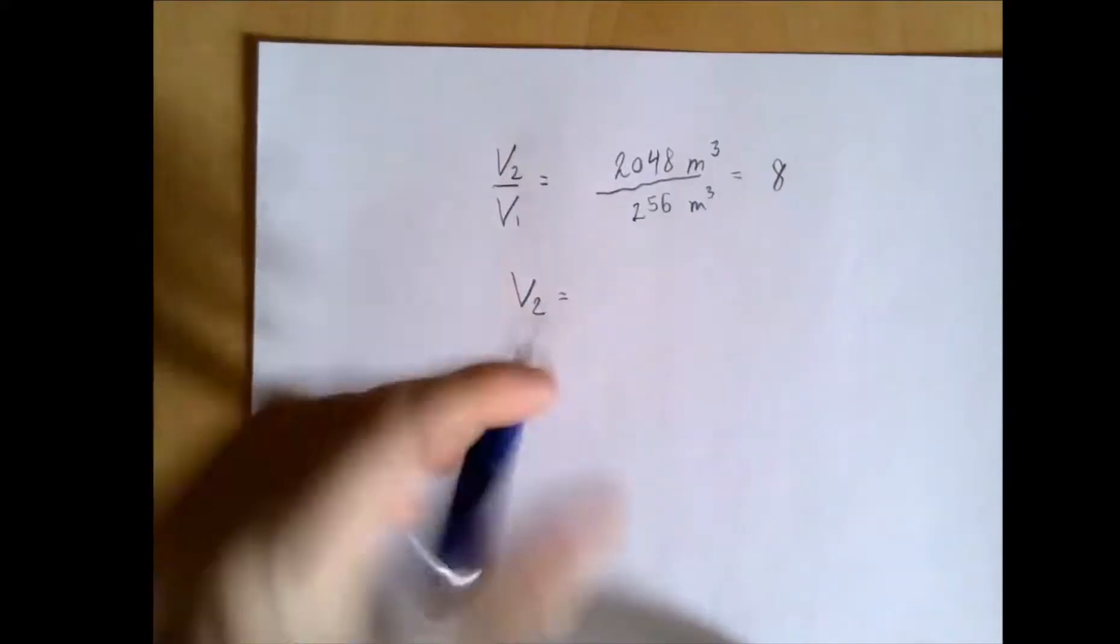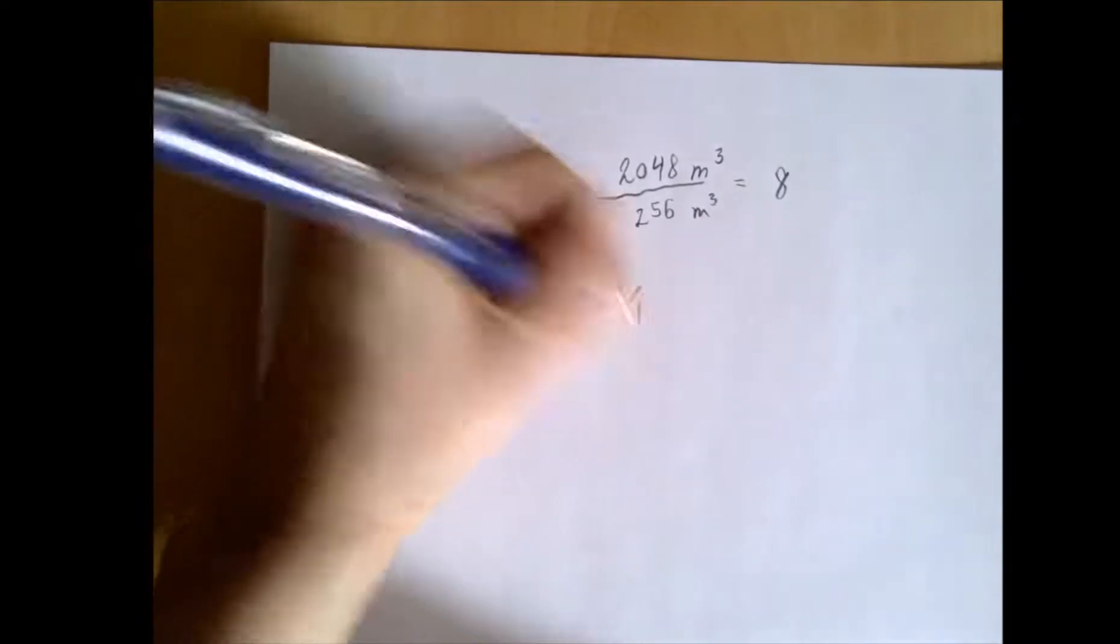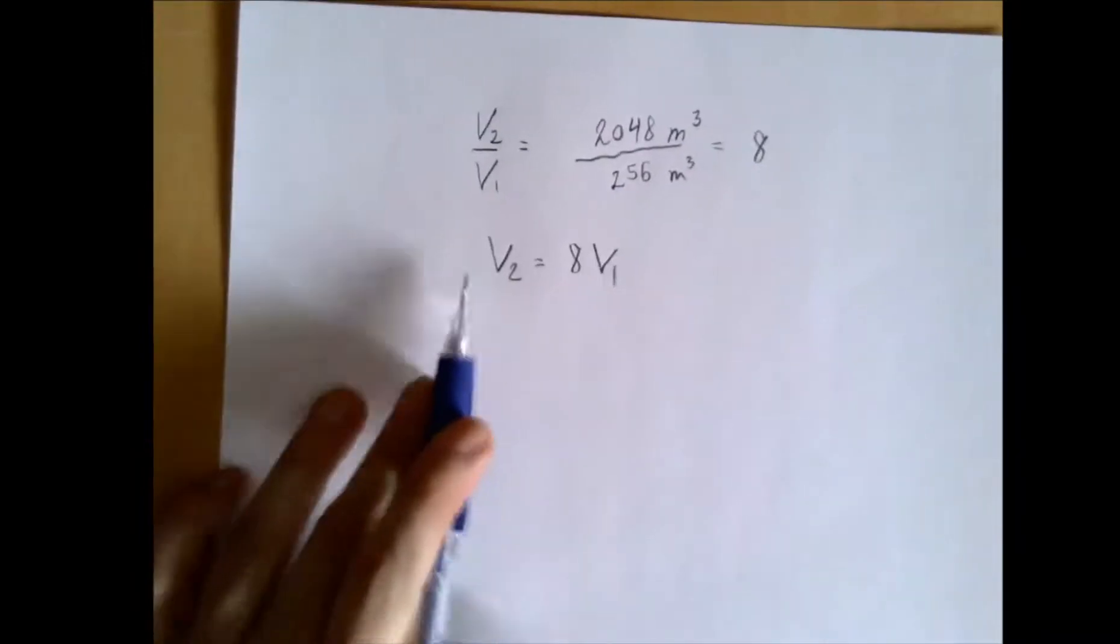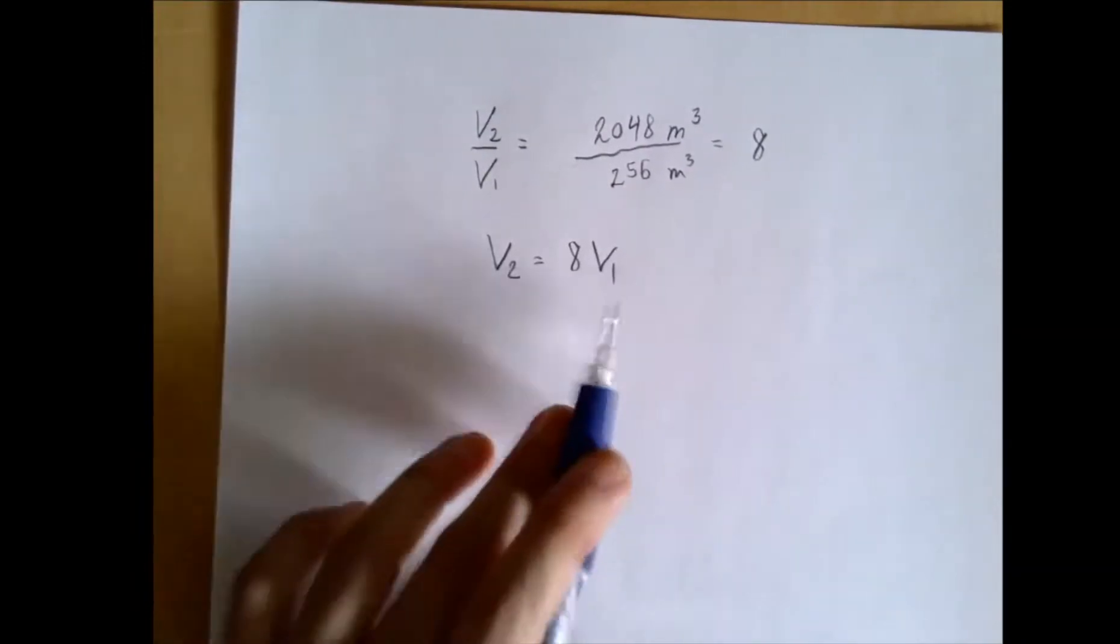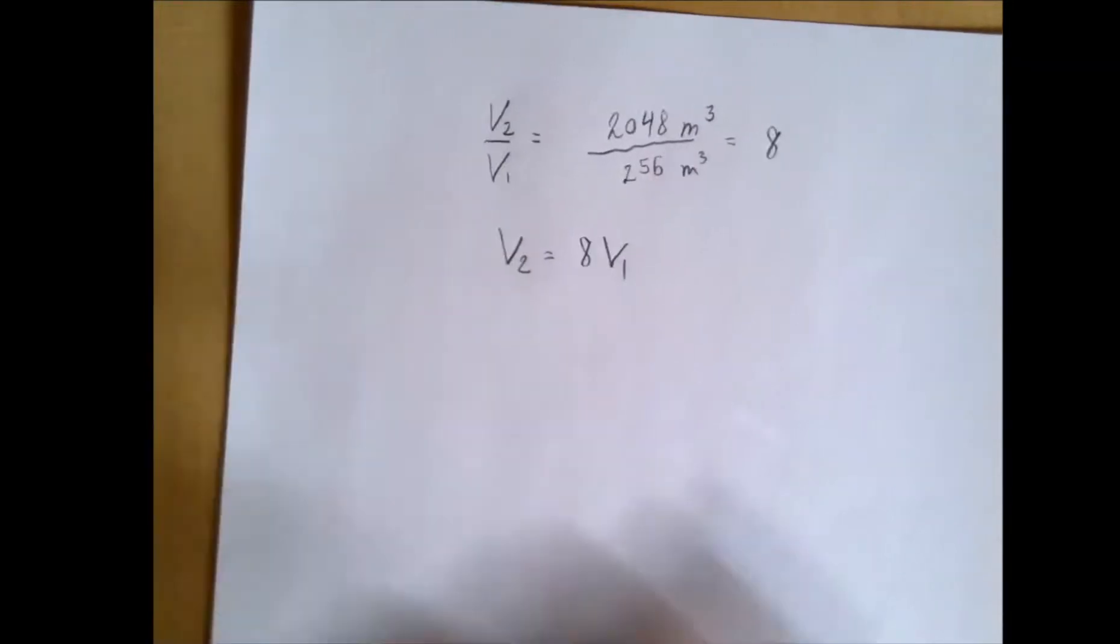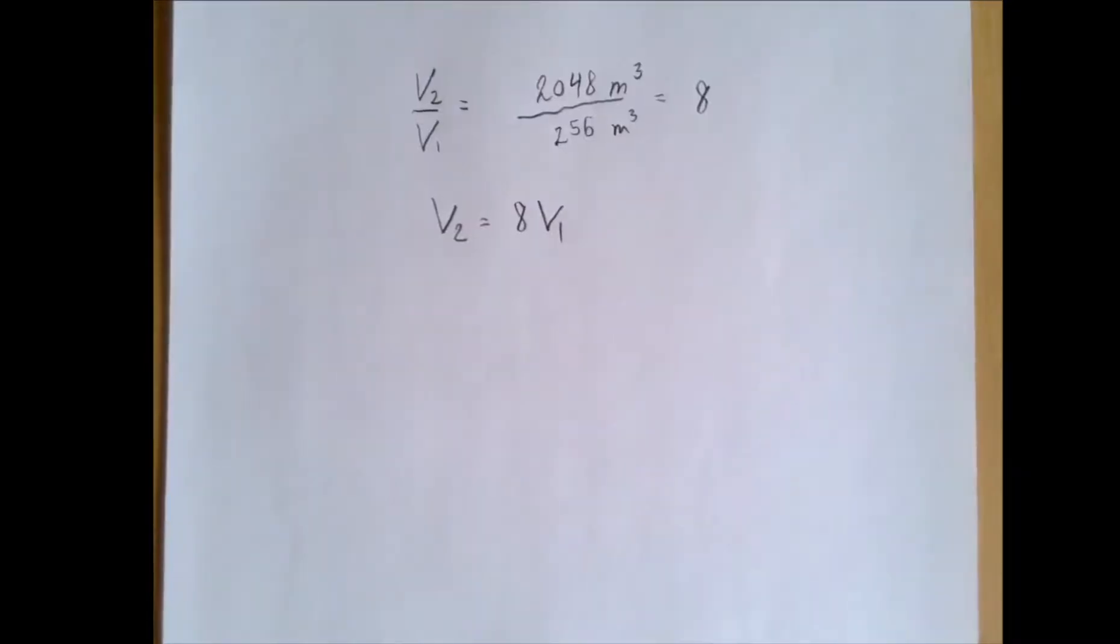If we multiply both sides by V1, we get... So the big pyramid's volume is 8 times the volume of the small pyramid. And that's not exactly an accident. This is because we doubled all sides and the height.